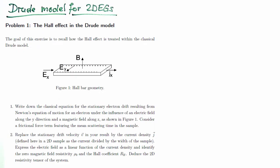In this exercise we remind ourselves of Drude's description of the longitudinal and Hall resistivities in two-dimensional electron gases. To this end we consider the following microscopic setting.